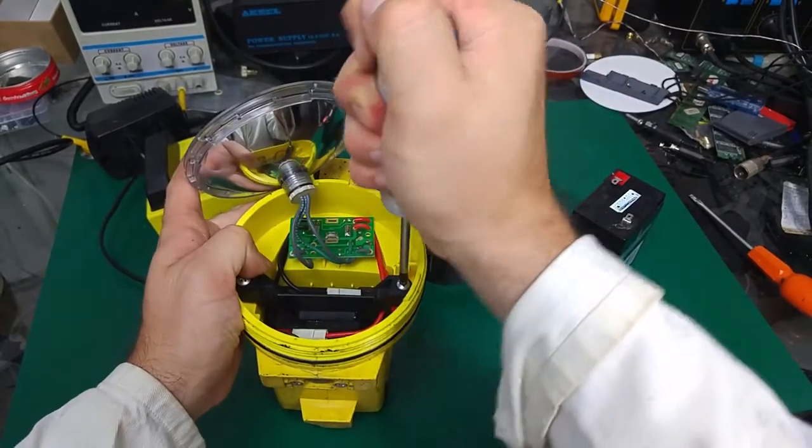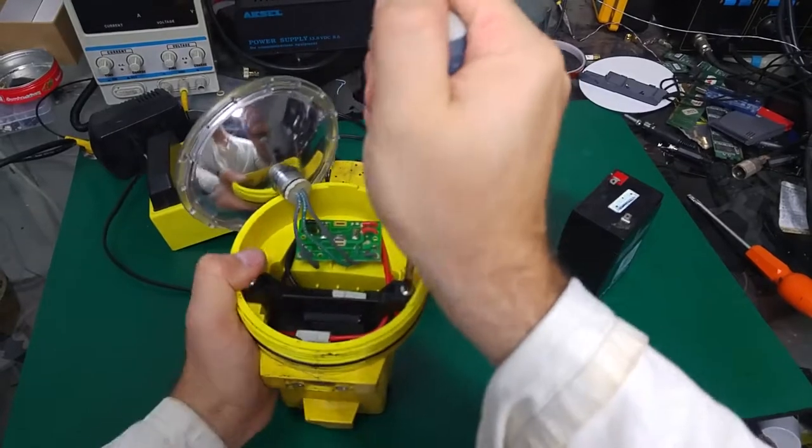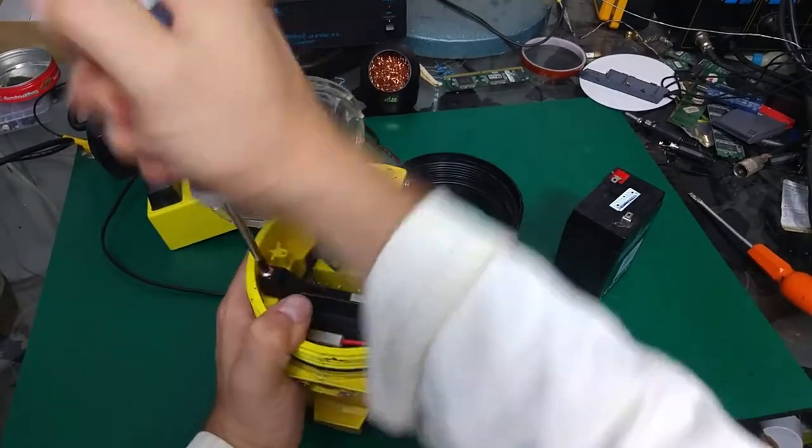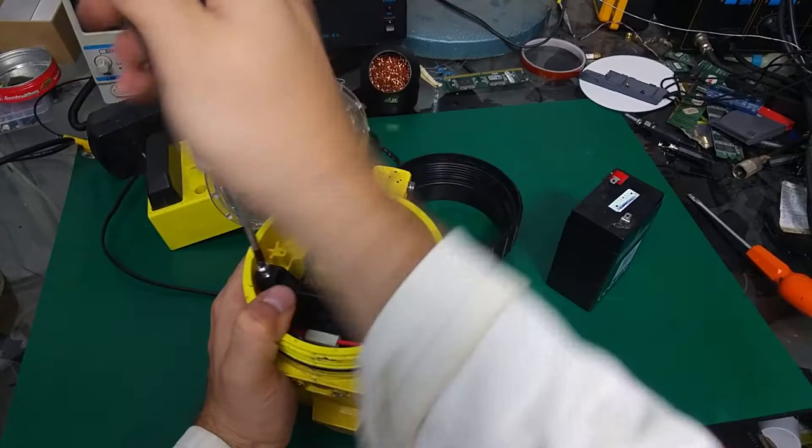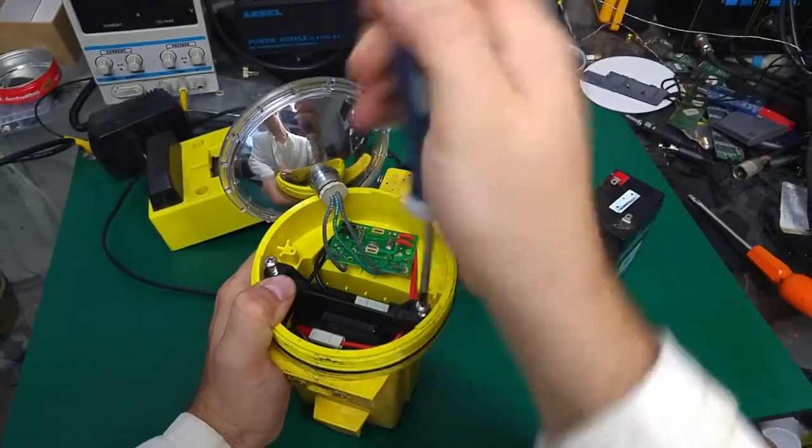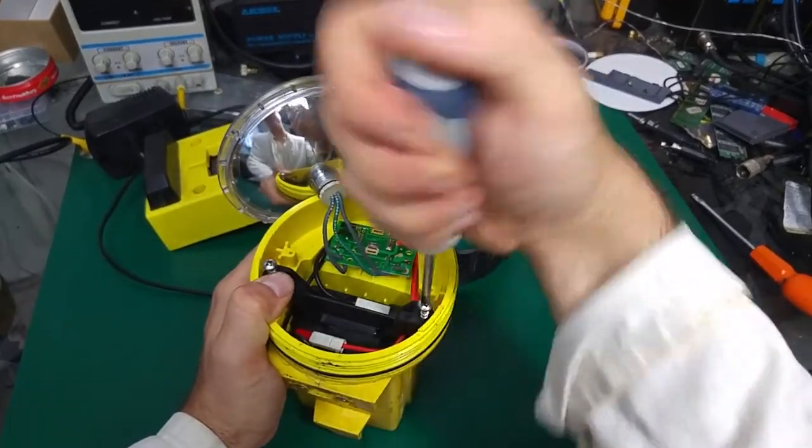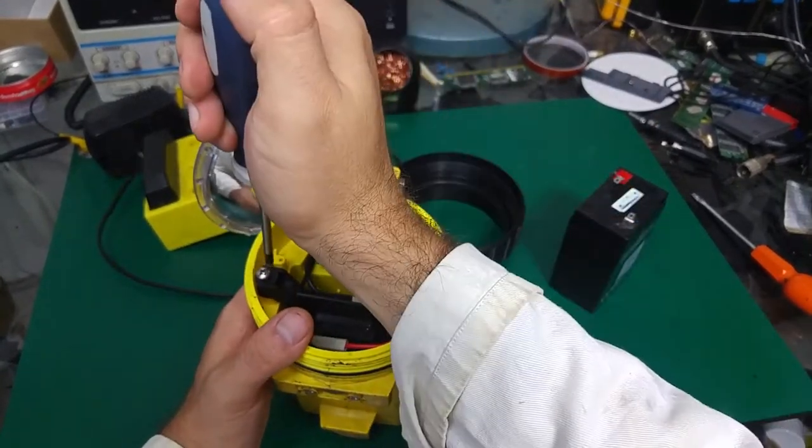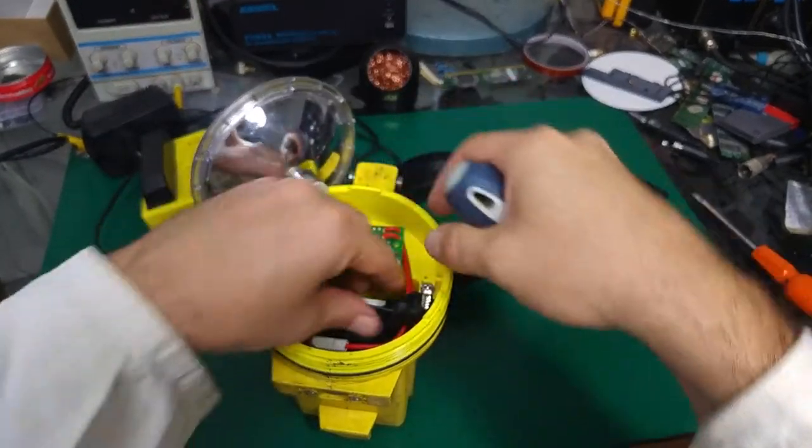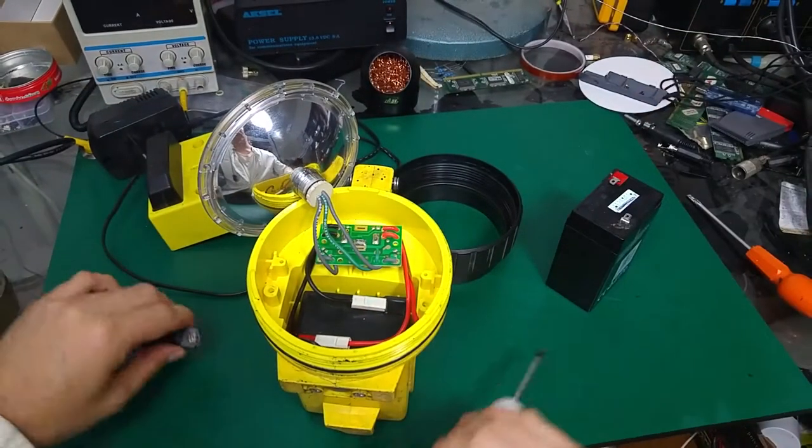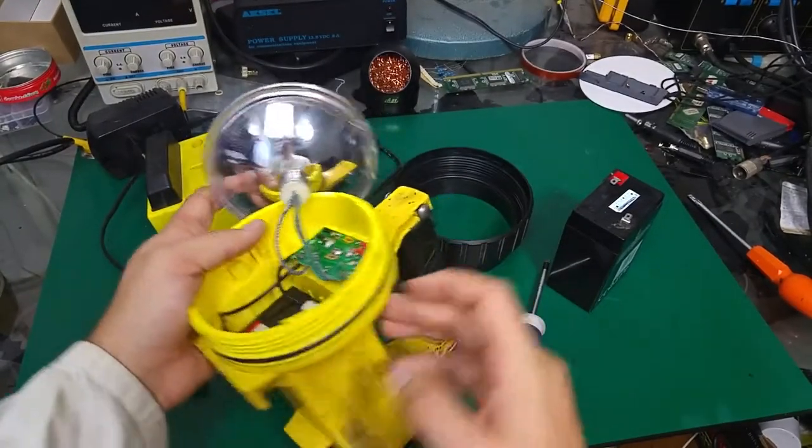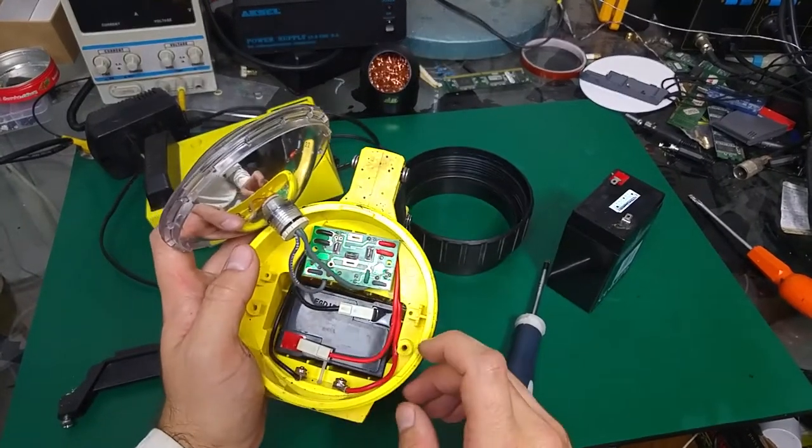So air and water tight, I'm just going to unscrew. Okay, it's almost done and we will have full access to our battery. Yes, it's done. We've got our bulb, we've got our switch, the connector for the charging, and our rechargeable 6 volt standard battery.